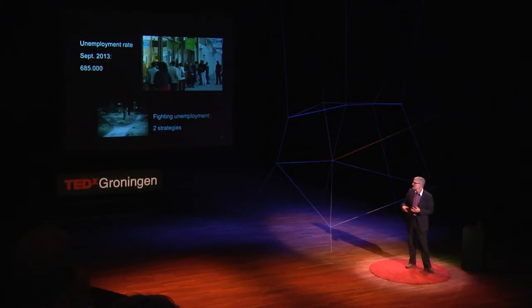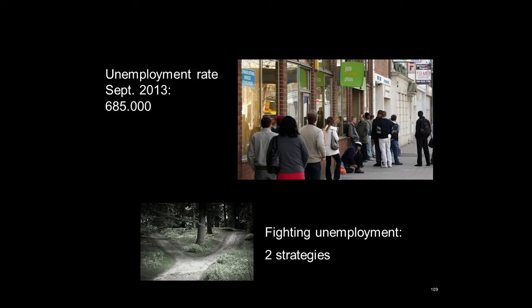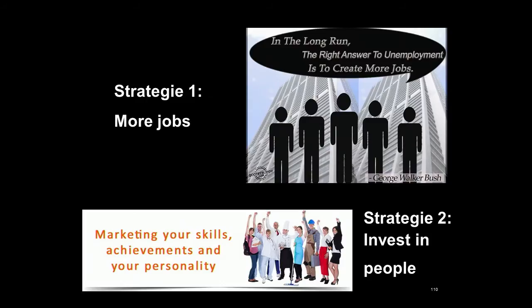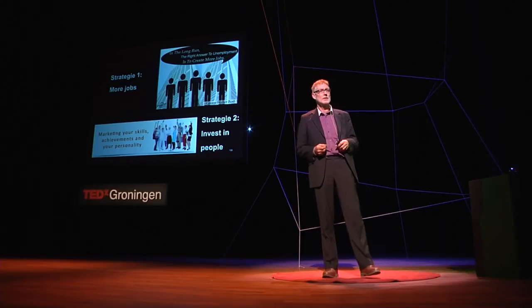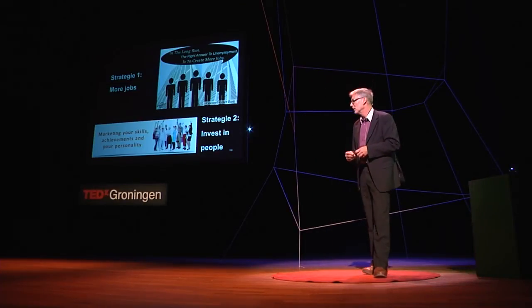Let's see some figures. We have an unemployment rate of 6,085 people in the Netherlands nowadays. And there are two strategies for fighting unemployment. The first one is the economy, as someone said earlier: create more jobs. Simply, when there are more jobs available, there are more people at work.